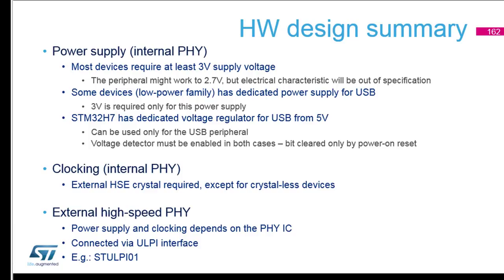If you want to use PA9 as a standard GPIO without USB on L0, you can connect VDD_USB to 2V so the maximum voltage on PA9 is also 2V. On H7, our highest-performance microcontroller, there are two high-speed peripherals with additional features and a dedicated internal regulator from 5V to 3V — however, the voltage from this regulator cannot be used for any external functionality; it is only for internal powering of the peripheral.